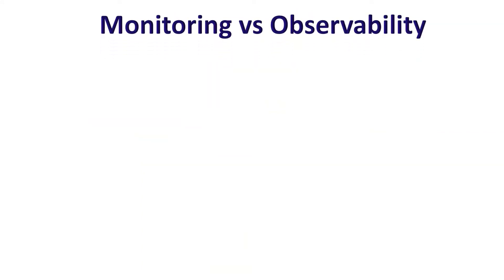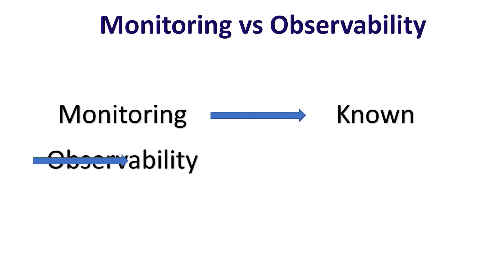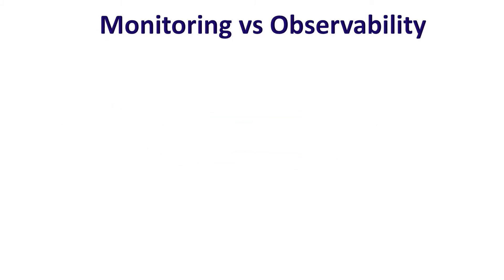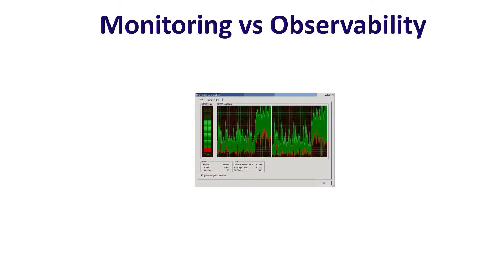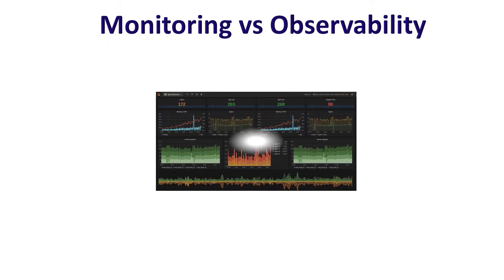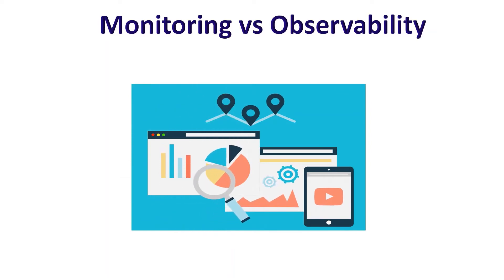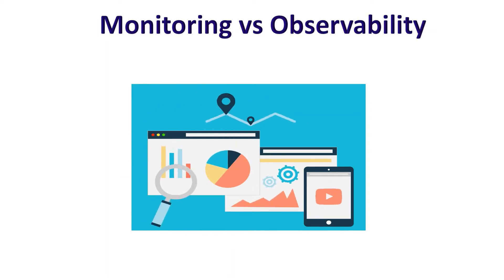Now let's understand how monitoring is different from observability. If I need to differentiate in a few words, I would say monitoring deals with knowns whereas observability deals with unknowns. For example, if we have a system whose throughput would be impacted if CPU usage goes beyond 95%, we usually create a dashboard and monitor the CPU usage, setting alerts on certain threshold values so that on breaching those values we are alerted and can quickly take preventive actions to safeguard our application.